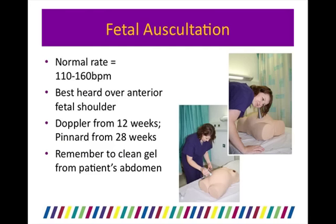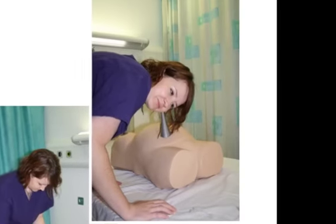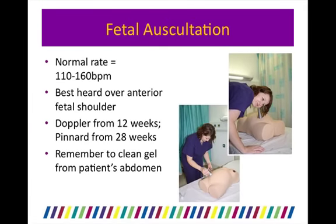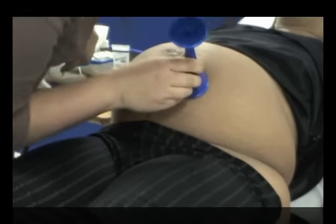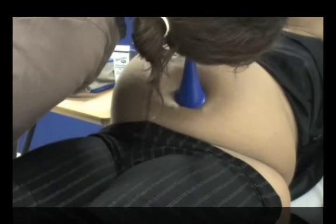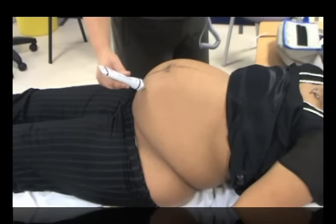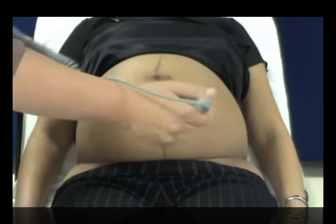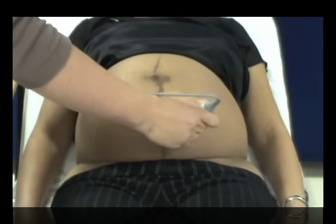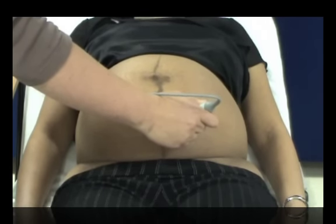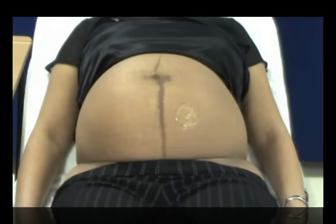Auscultating the fetal heart: the normal fetal heart rate is between 110 and 160 beats per minute, and it is best heard over the anterior fetal shoulder. Doppler can be used from 12 weeks to detect a fetal heart, and a Pinard's stethoscope from 28 weeks. If using a Pinard's stethoscope, place the trumpet end over the anterior fetal shoulder, put your ear to the other end, and ensure no part of your hands is touching the stethoscope otherwise you will be unable to hear the fetal heart. Time the fetal heart in beats per minute using a watch. A doppler should ideally be used over the anterior shoulder, though often the fetal heart can be picked up from the front of the fetal chest. Some dopplers have a screen displaying the heart rate; with others you time for 15 seconds and calculate the pulse. Remember to clean the gel from the patient's abdomen with a tissue afterwards.